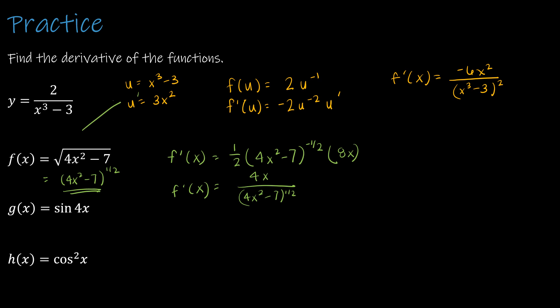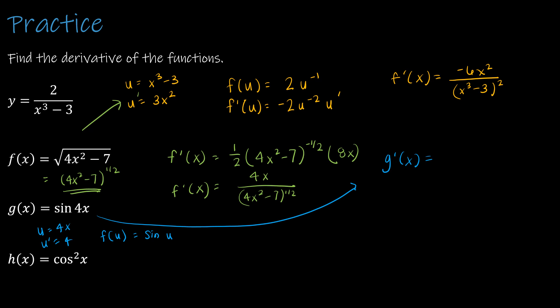The more you practice the chain rule, the easier it becomes and you won't need the extra steps. For g'(x) where g(x) = sin(4x): u = 4x, u' = 4, and g(u) = sin(u), so g'(u) = cos(u) · u'. Therefore g'(x) = cos(4x) · 4, or 4cos(4x). Without the u substitution: derivative of sin(4x) is cos(4x), times derivative of 4x, which is 4.